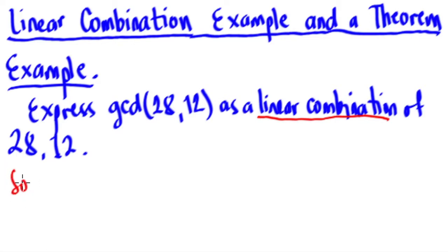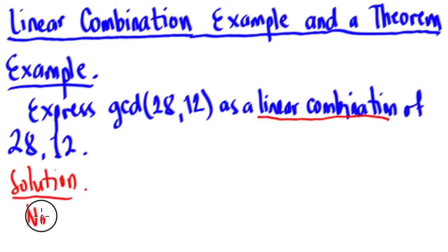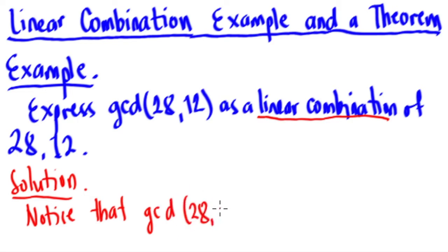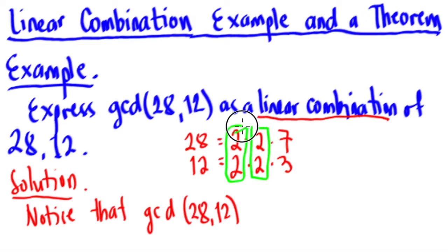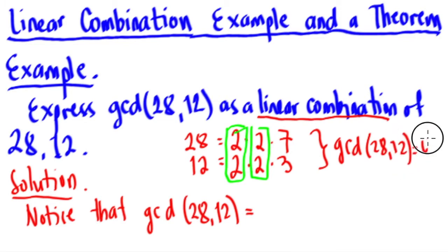For the solution, we first find the GCD of 28 and 12. We factor: 12 is 2 times 2 times 3, and 28 is 2 times 2 times 7. The common factors are 2 and 2, so the GCD of 28 and 12 is 4.